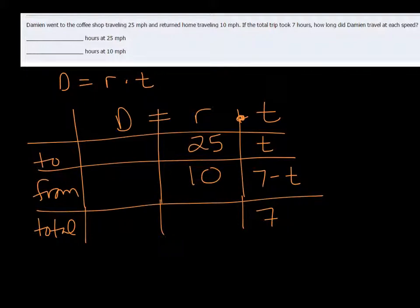Because for example, say it took him three hours to get to the coffee shop, then it would only have taken four to get back home. Because three plus four is seven. So you just subtract the other one from seven. That's probably the hardest part of it right there, is understanding and setting up this T.